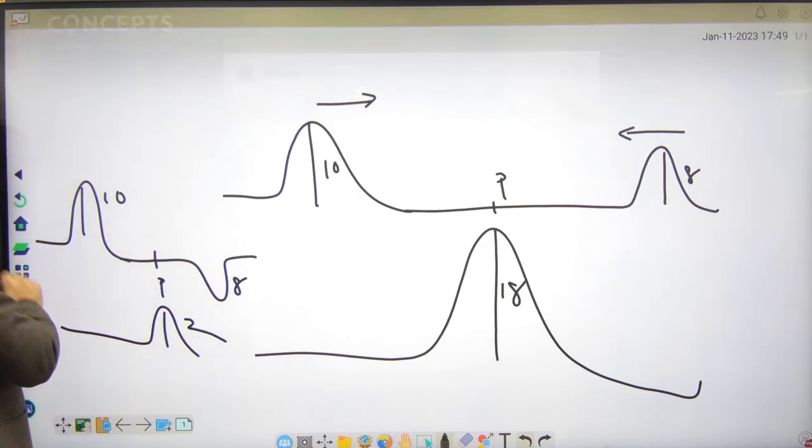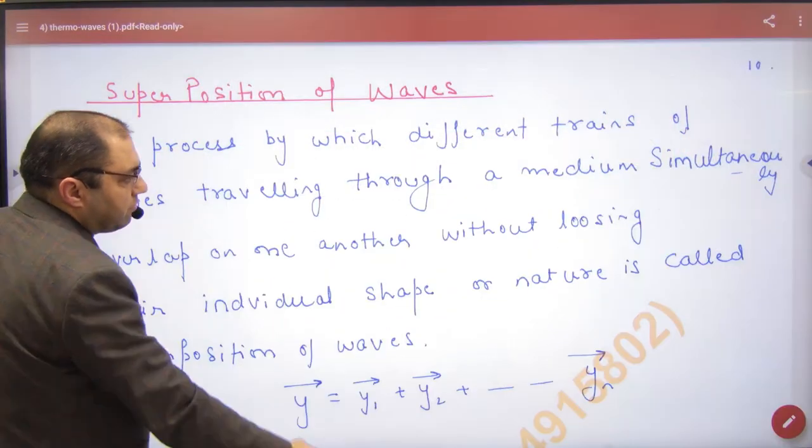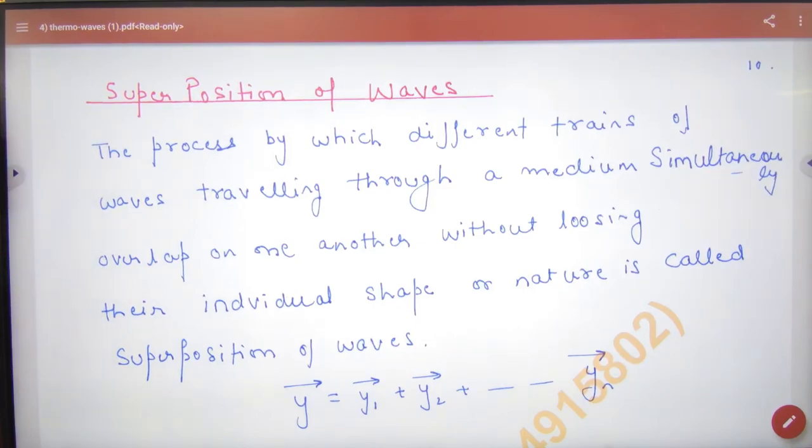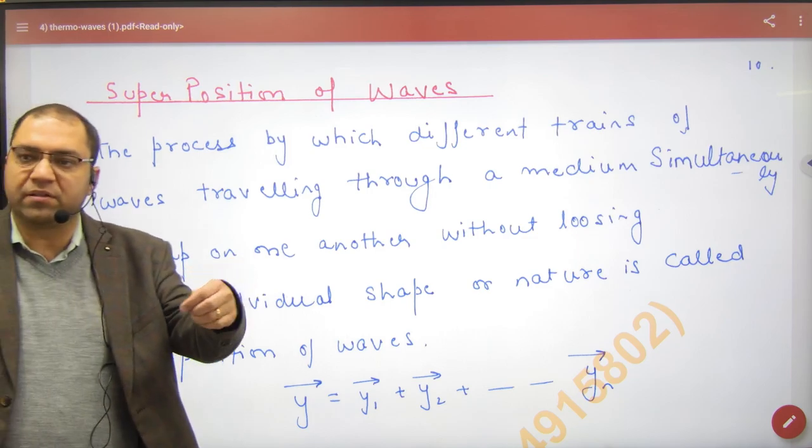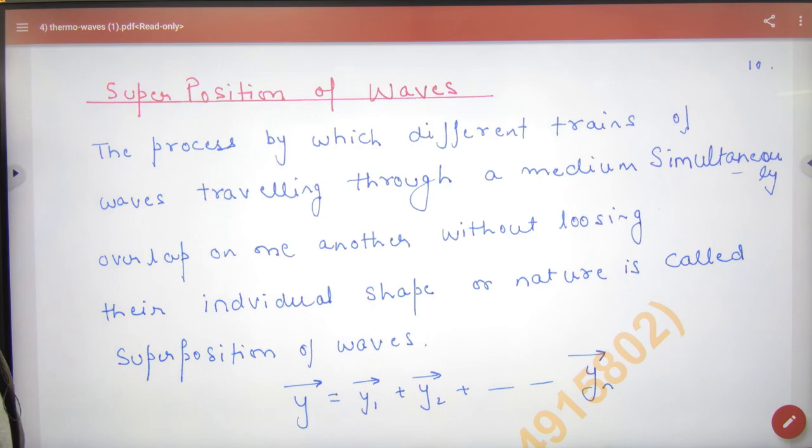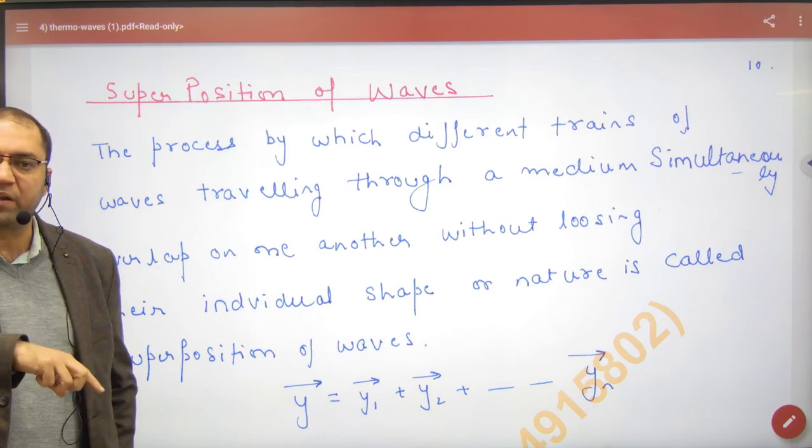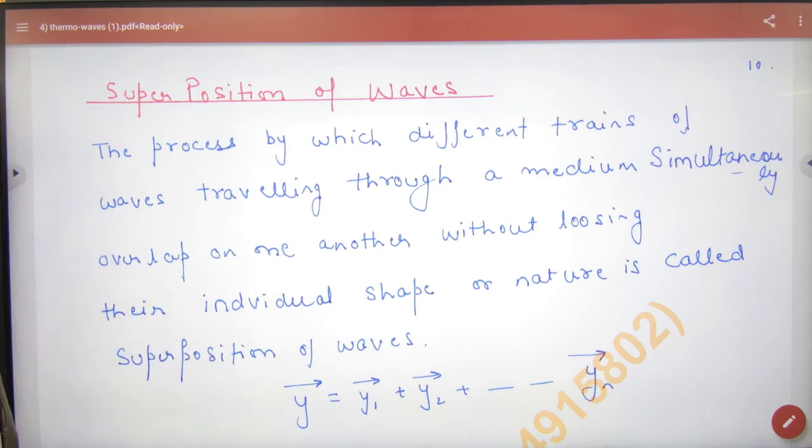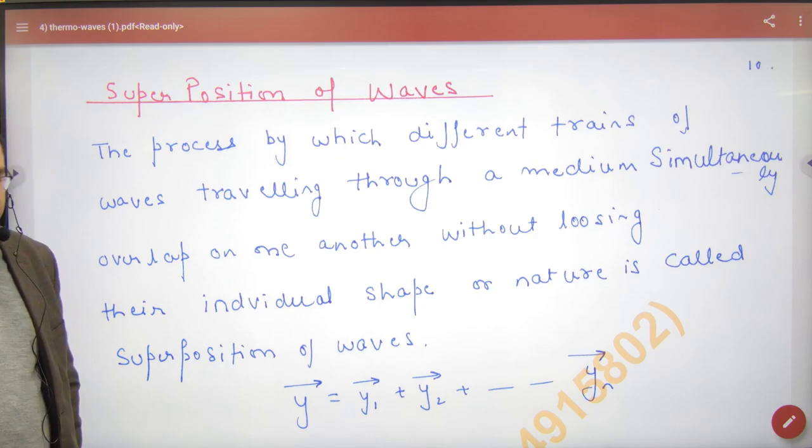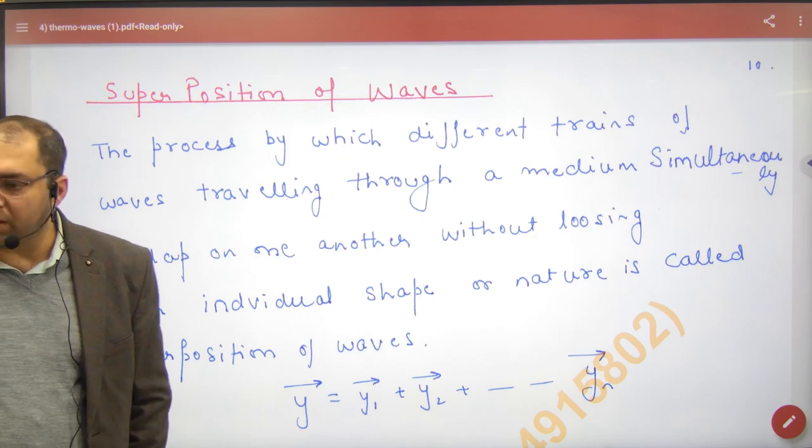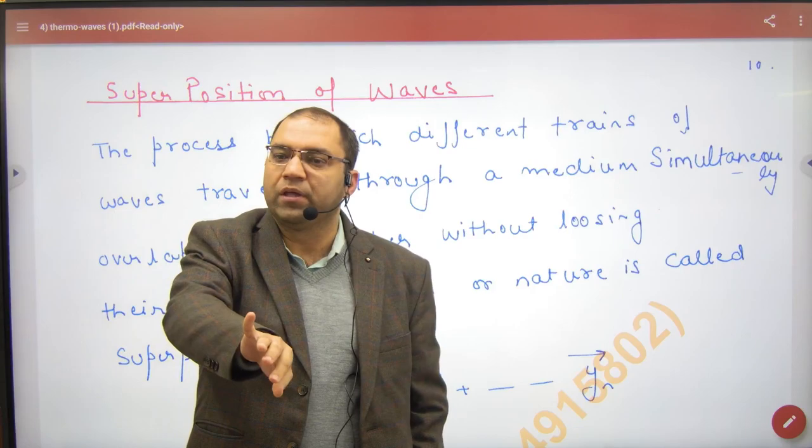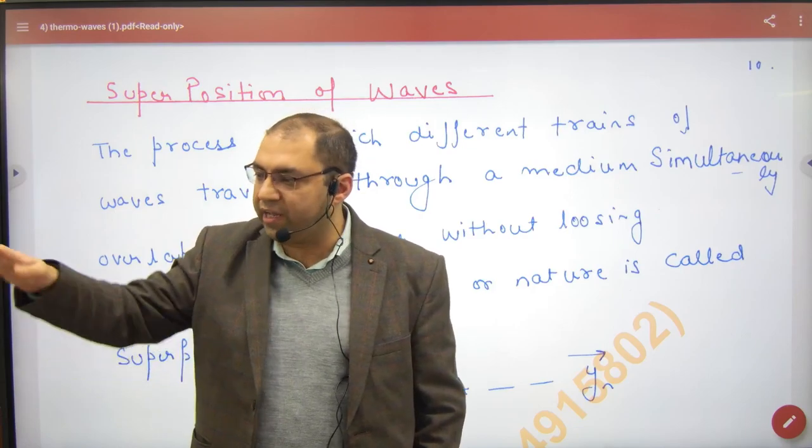So we have done this superposition principle, and this is an important marker. This is the process by which different trains of waves traveling through a medium - different wave pulses traveling in a medium - simultaneously overlap on one another without losing their individual shape or nature. Like, if there is a wave that is sinusoidal - a sinusoidal wave is also called a sine wave...